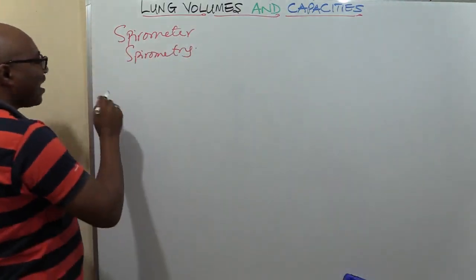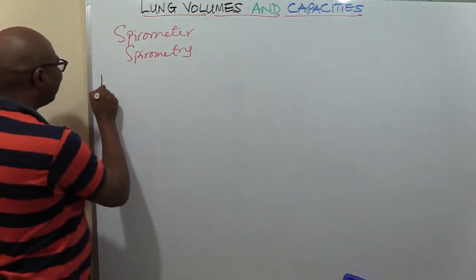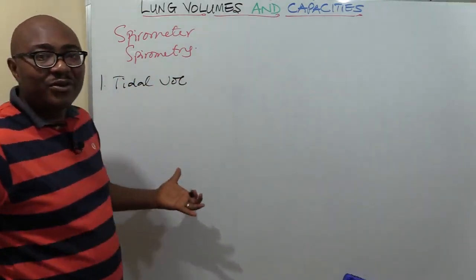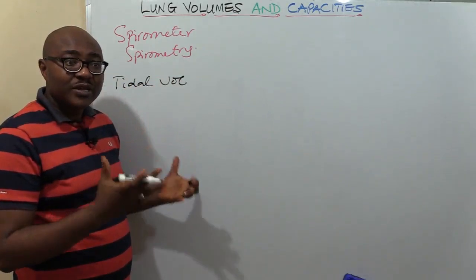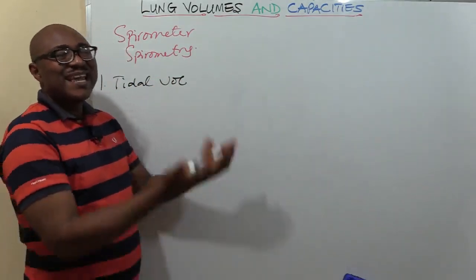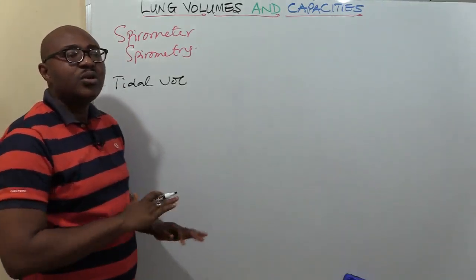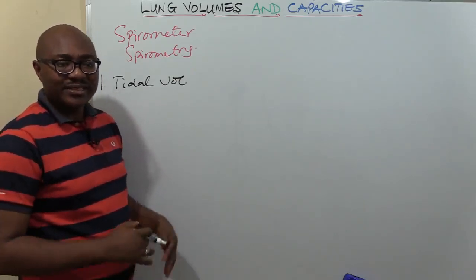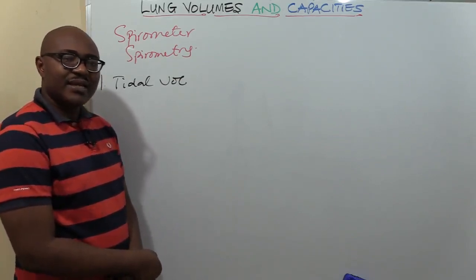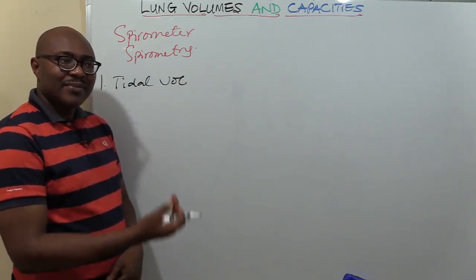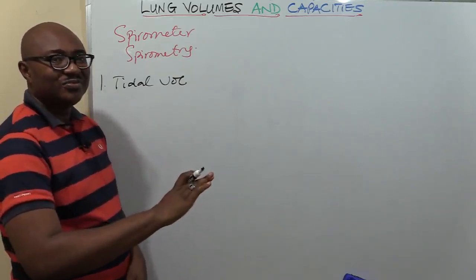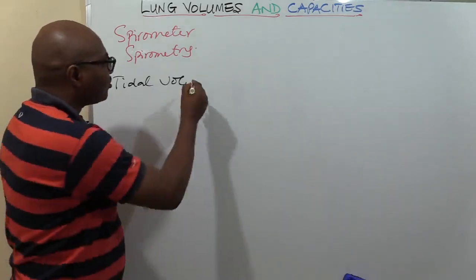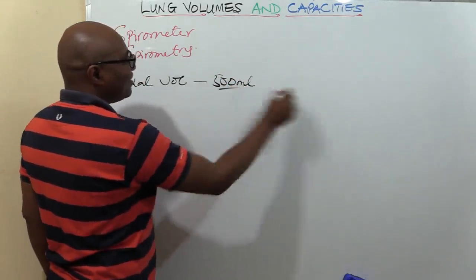We have four volumes and four capacities. Let's start with the first one: tidal volume. Tidal volume is the volume of air that you take in and breathe out during normal quiet breathing — when you are just awake, not exercising, not sleeping, just breathing quietly. For an adult male, tidal volume is about 500 milliliters.